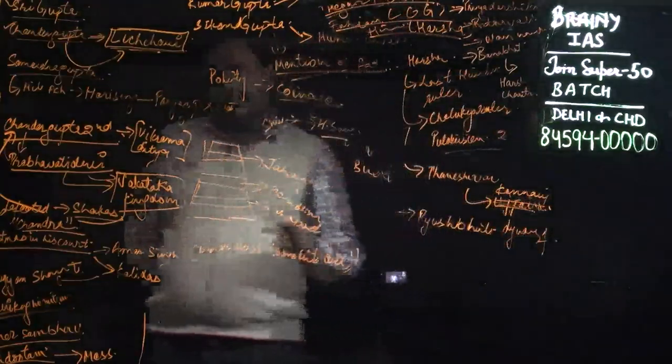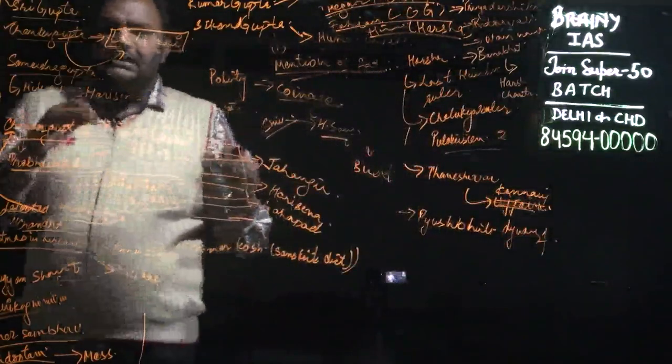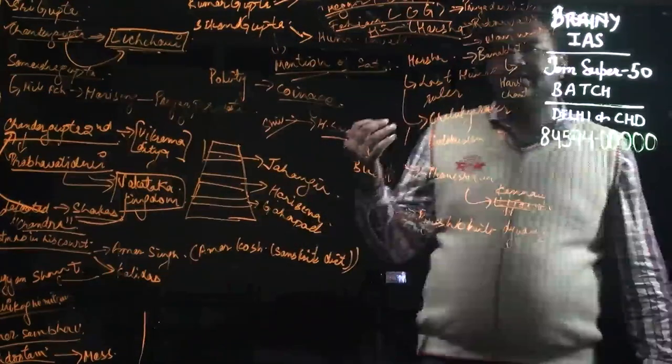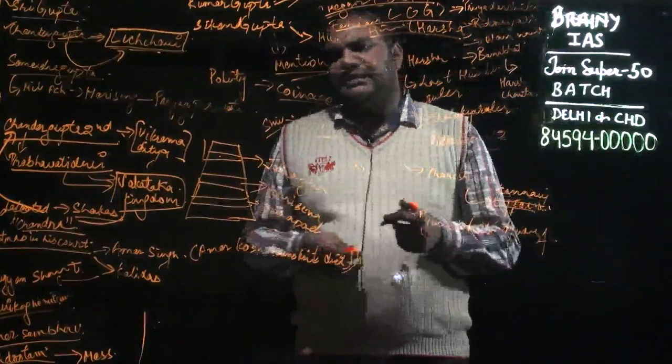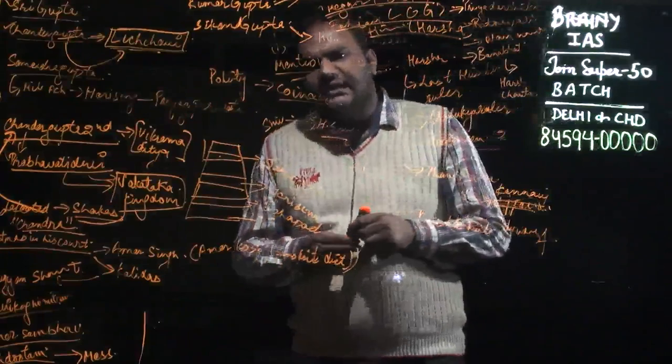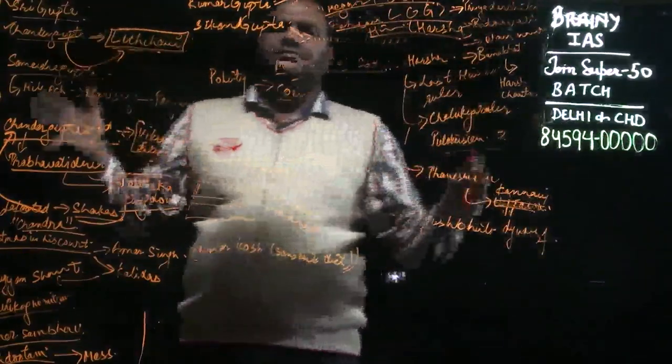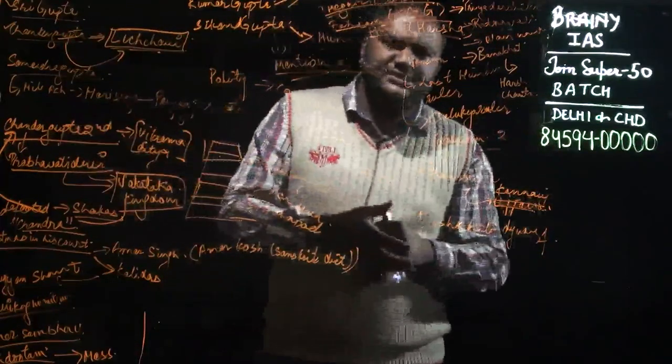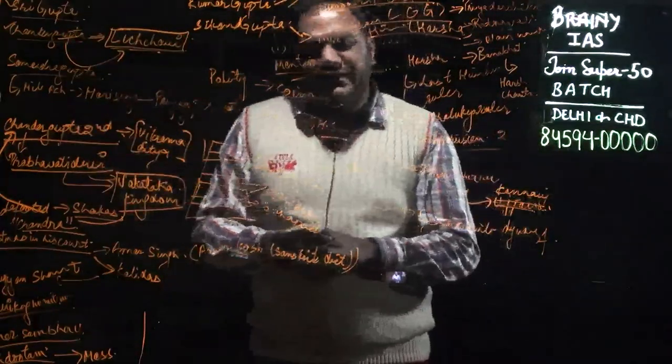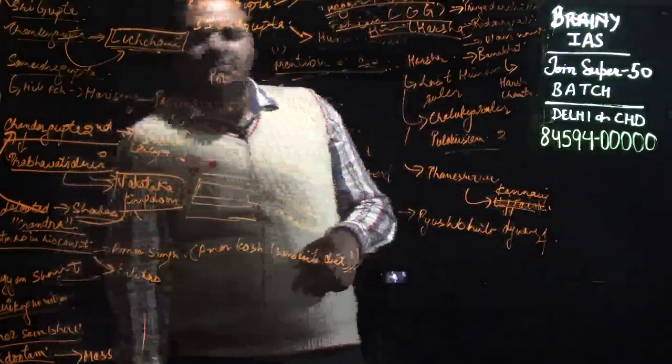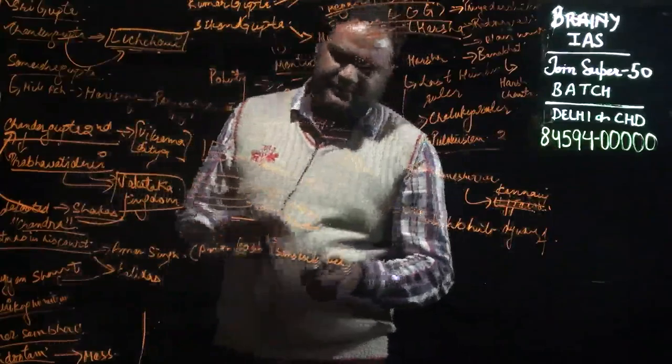After this, Indian dynasties were separated into different parts with Pallavas in the south and Chalukyas of Badami in the Deccan. This completes our entire ancient Indian history. In the next lecture series we'll discuss medieval India. Till that time, keep studying and stay fit. Thank you very much.